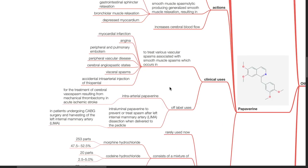Clinical uses of papaverine. It is used to treat various vascular spasms associated with smooth muscle spasms which occurs in myocardial infarction, angina, peripheral and pulmonary embolism, peripheral vascular disease, cerebral angiospastic states, visceral spasms and accidental intra-arterial injection of thiopental.